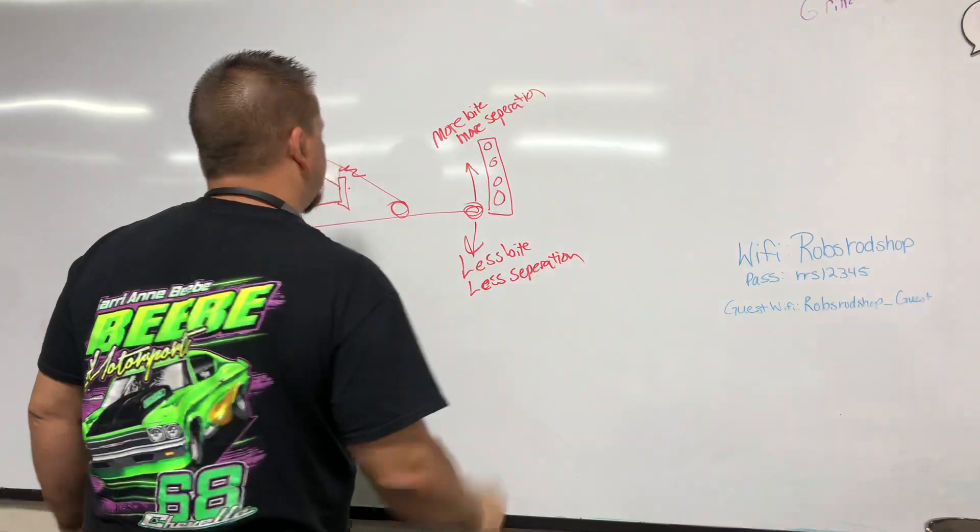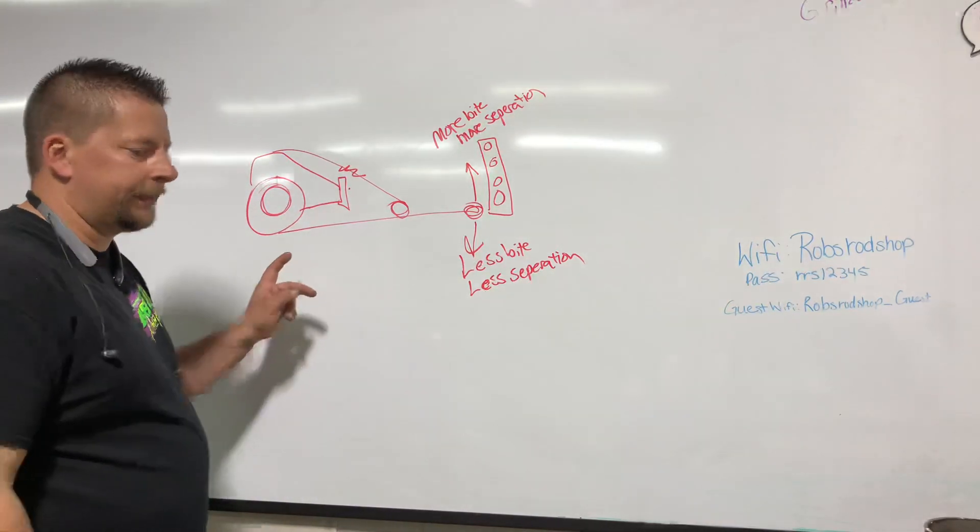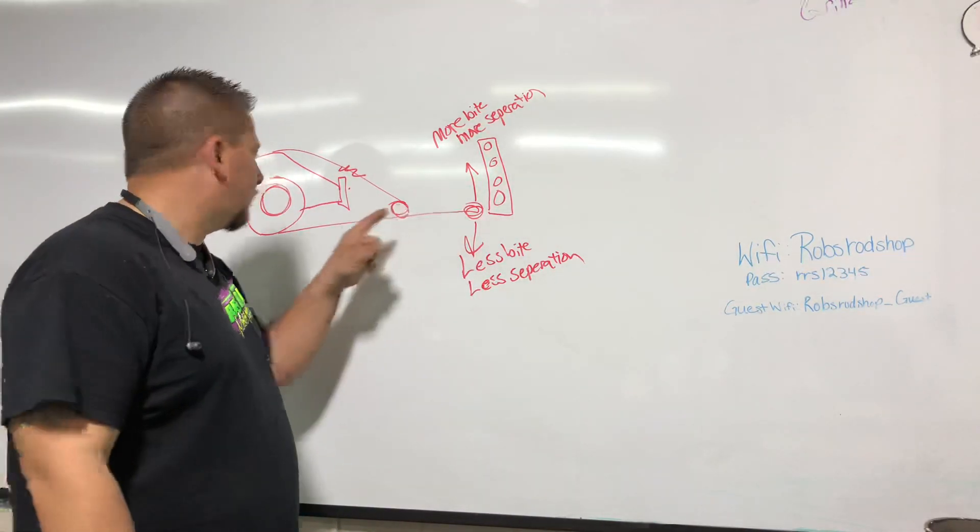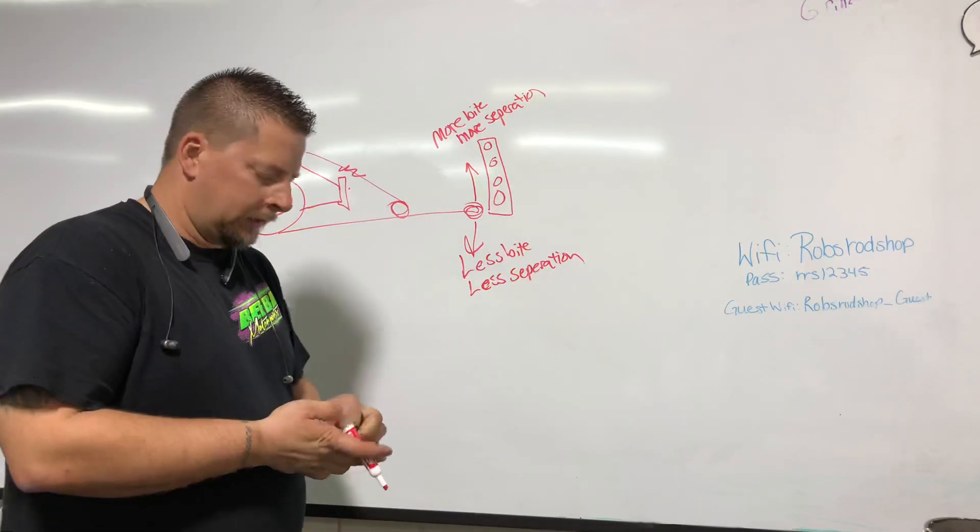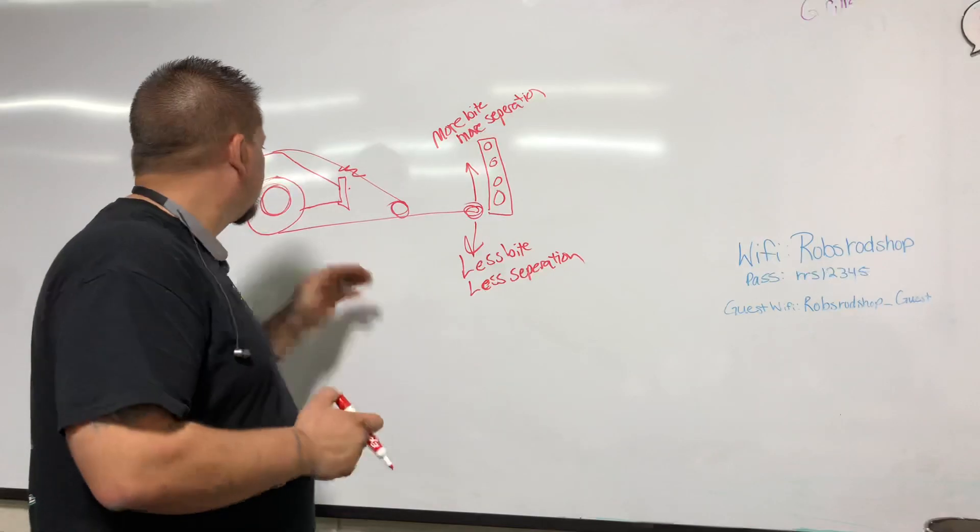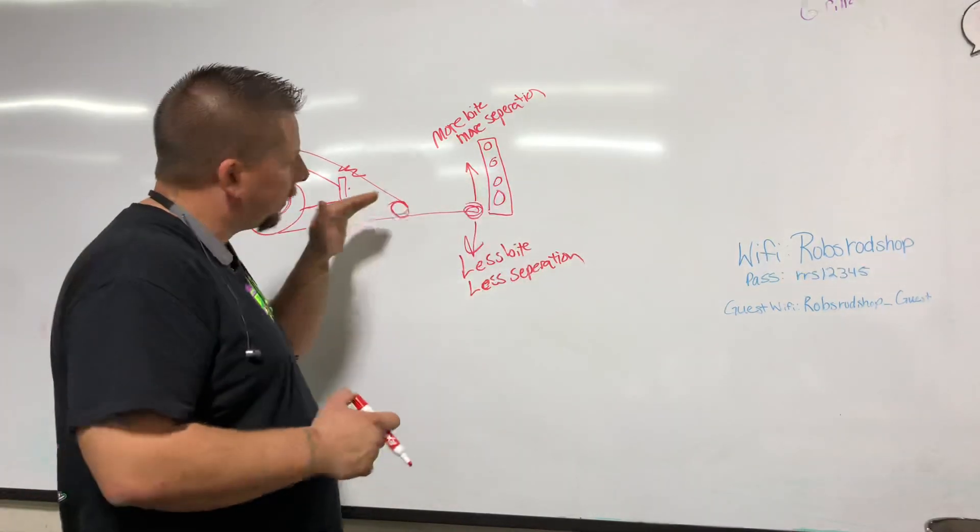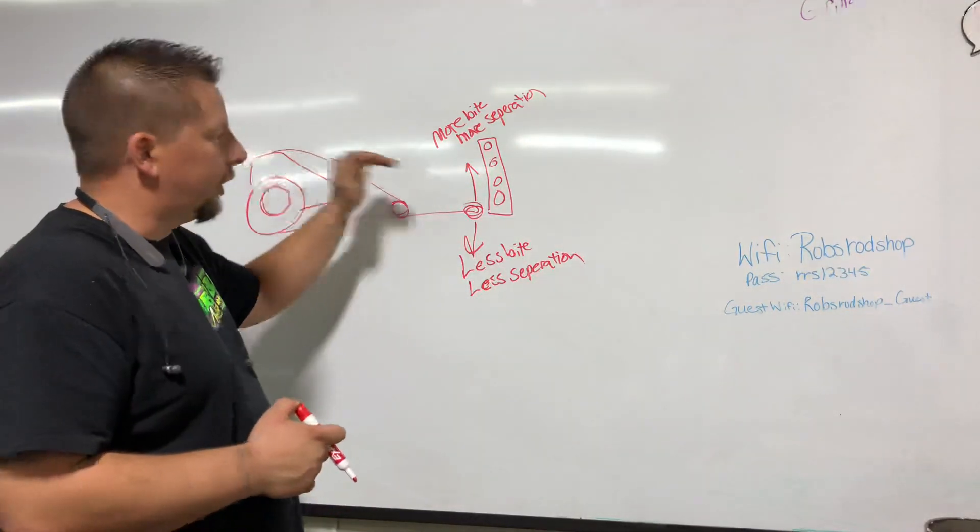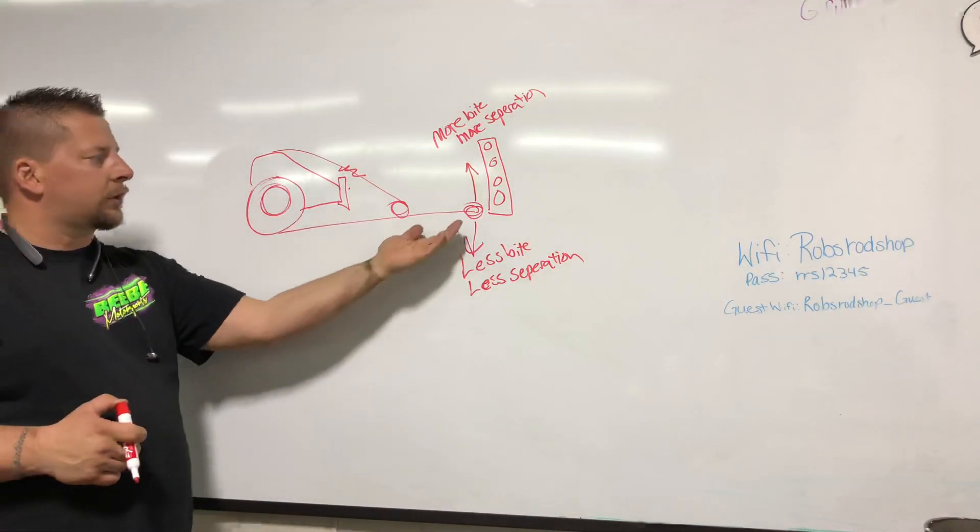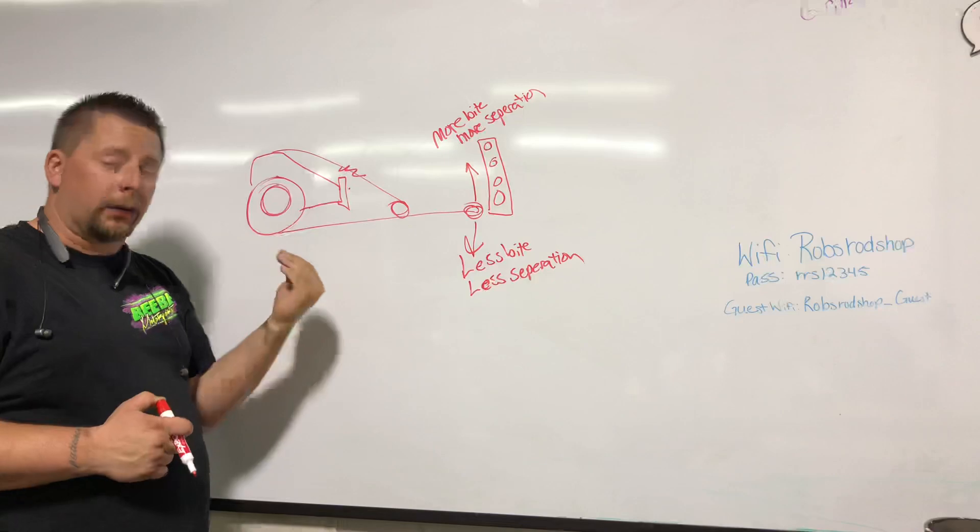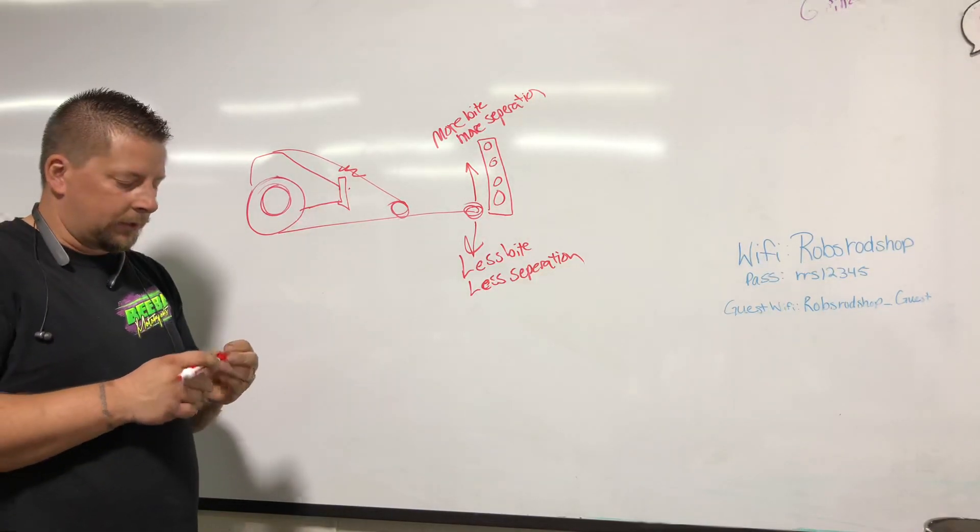You're also at the mercy of whoever built your setup as to how long this lower bar is, how long this front connection point is. Because the longer you make this, the longer it makes the instant center, the slower it will react. The shorter this bar is, the shorter the instant center, the quicker it's going to react.